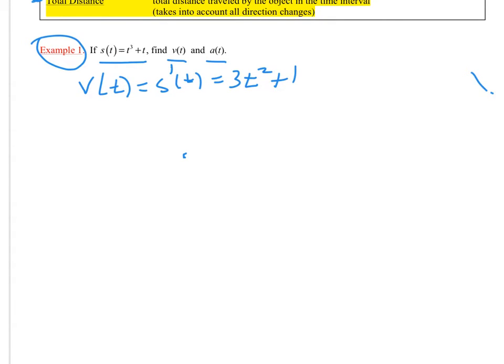Then my A of T will be equal to V prime of T, which is S double prime of T, which is going to be equal to 6T. So that's all it is. Velocity is the derivative of the position function. Acceleration is the second derivative of the position function. We've got a lot of dots going on here. Sorry.